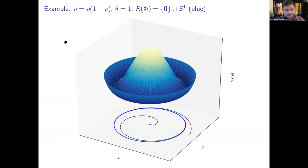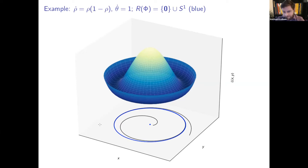The fundamental theorem of dynamical systems states that every continuous semi-dynamical system on a compact metric space admits a completely open Lyapunov function that strictly decreases on trajectories outside the chain recurrent set, is constant on the chain recurrent set, and can disambiguate different chain components.